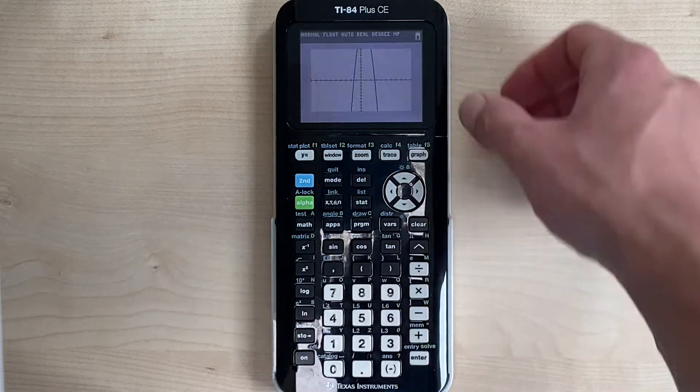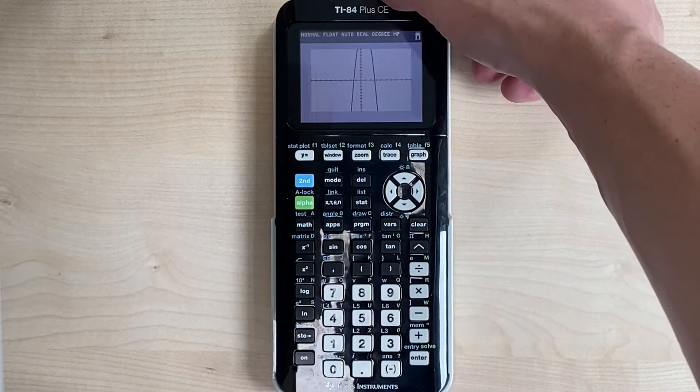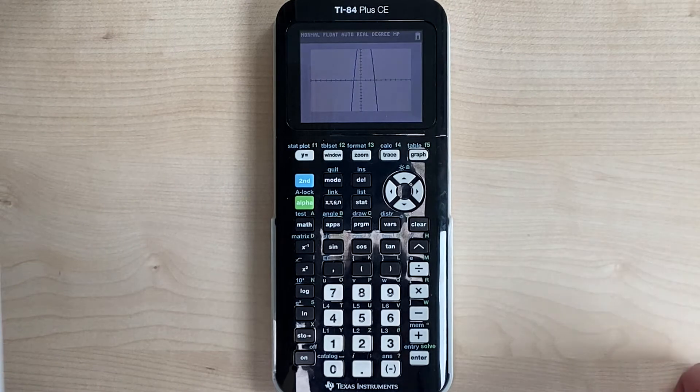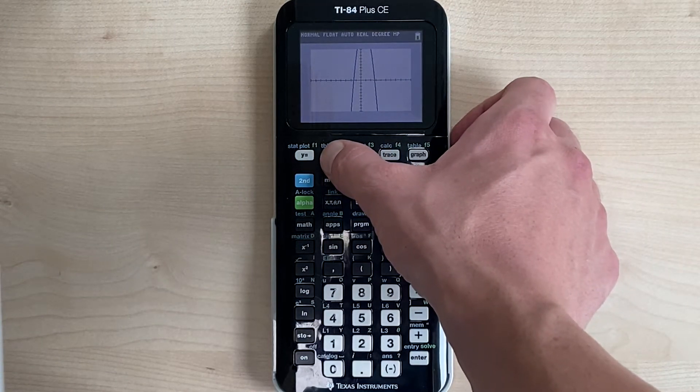So when we go back and look at our graph, we see that our vertex is above, or it's higher than what window we see right now. So we want to adjust our y-max.